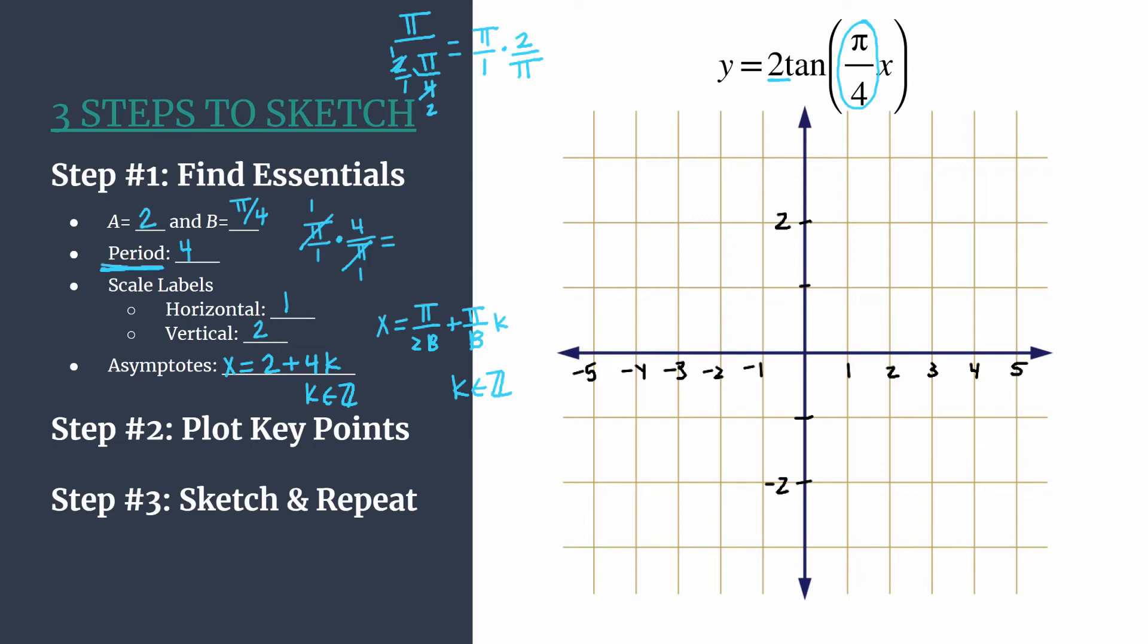So now we're on to step two, plot key points. So remember our pattern is point, point, asymptote, point. So we start at the origin with our first point. Our second point happens horizontally at the next tick mark over to the right from the origin. So one is the x coordinate, and we know A is the y coordinate. So two in this case. And again, that's the vertical stretch we're talking about.